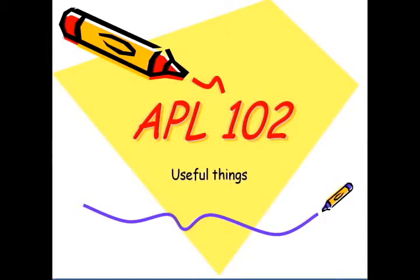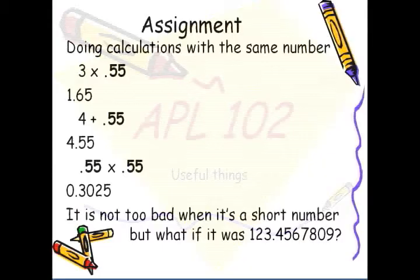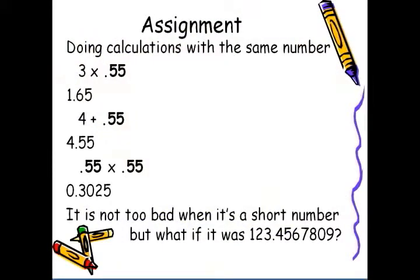This is the second part of the introduction to APL, where we're going to see some useful tricks. Very often we have to use the same number over and over again. For example, here we're using the number 0.55 in four different places. It would be nice if we could give it a shortcut or a name.